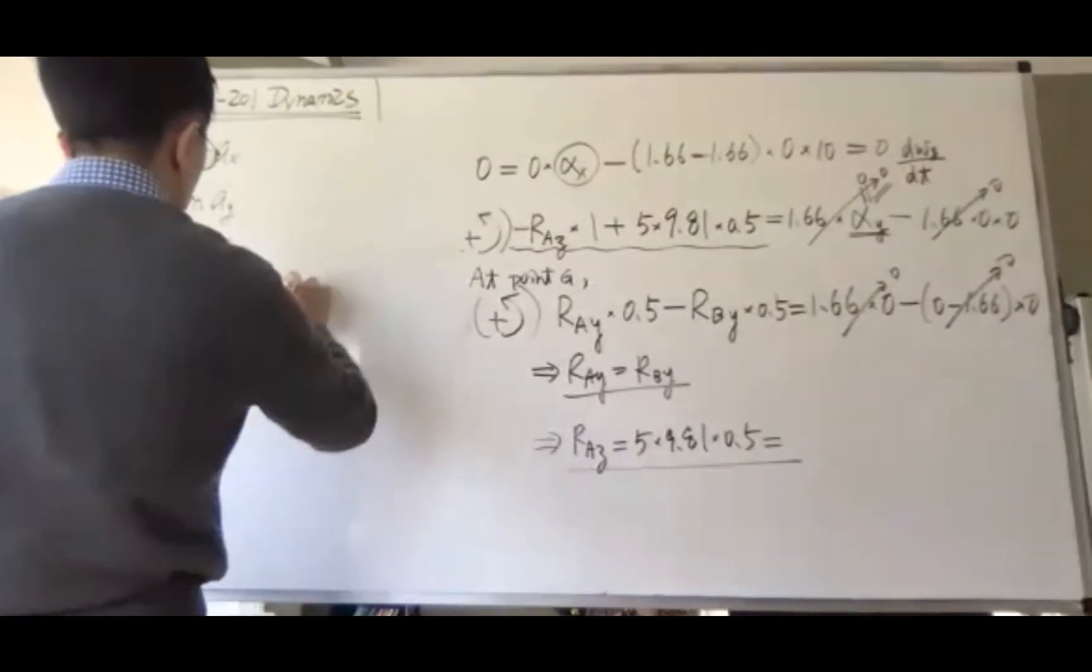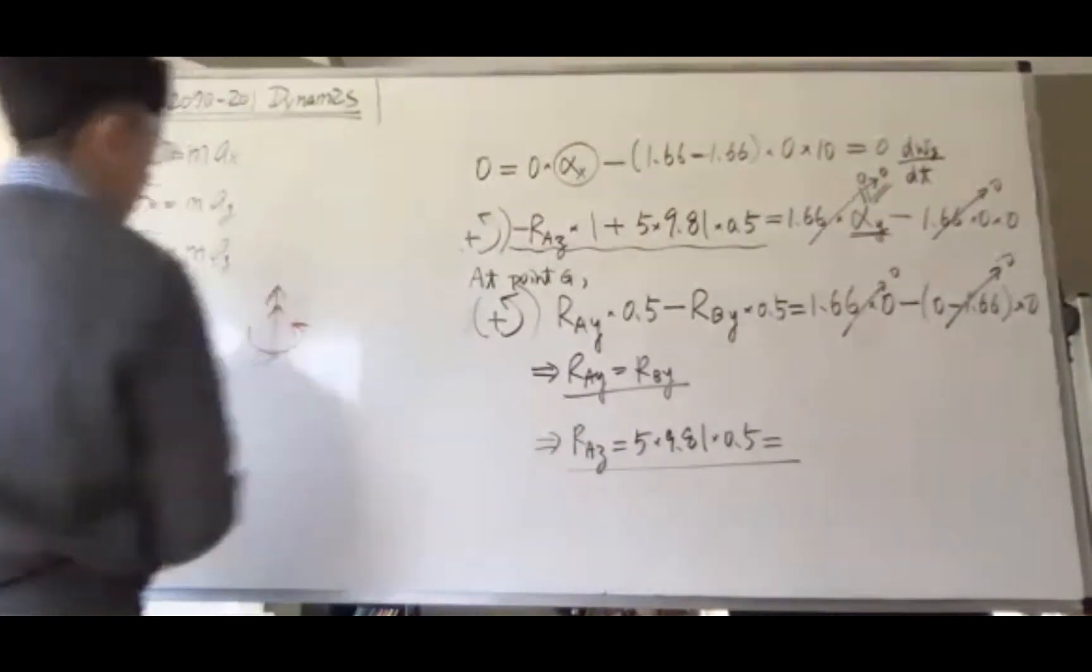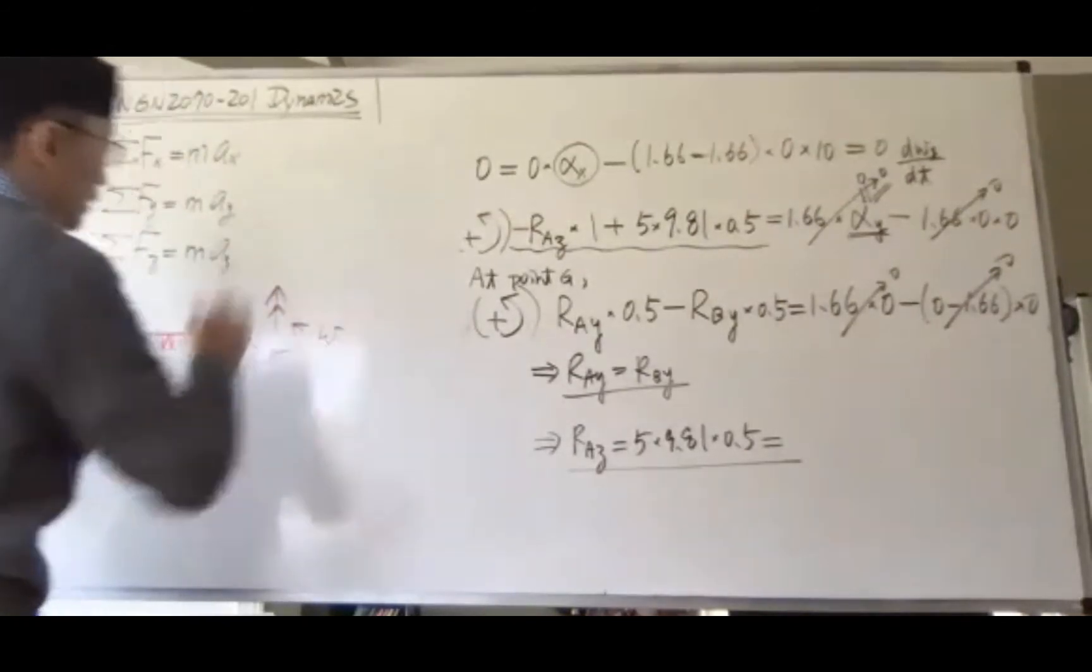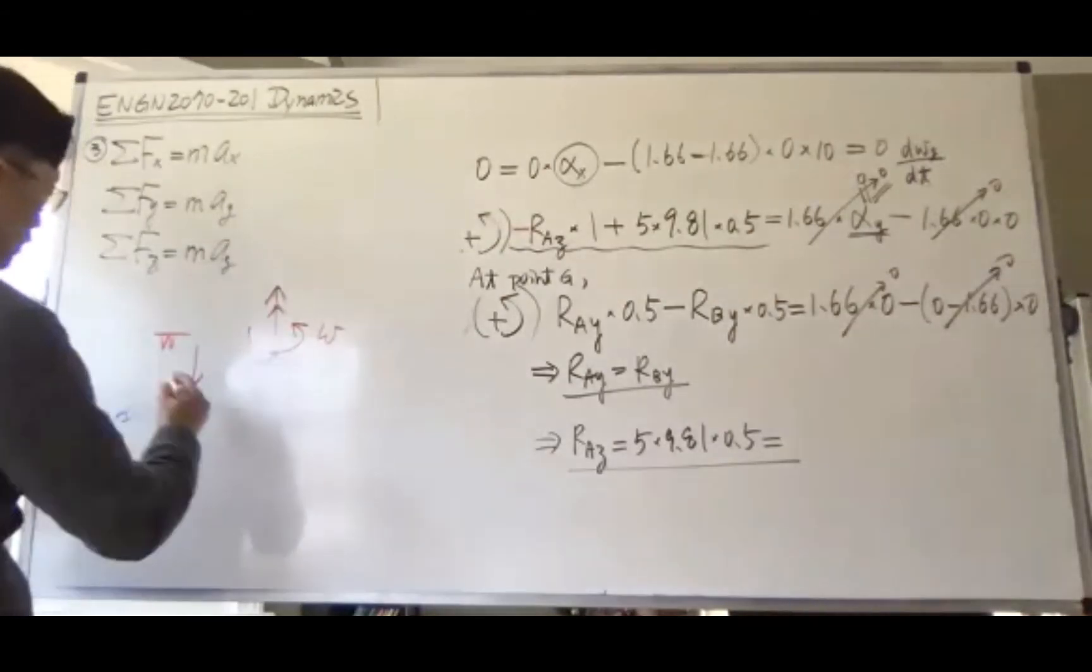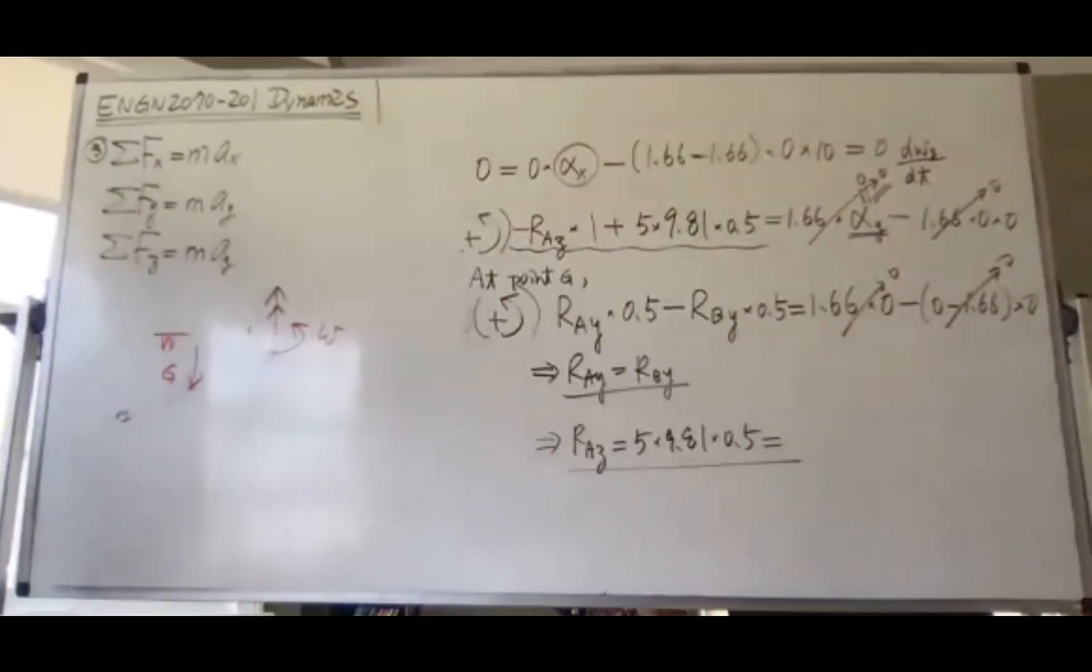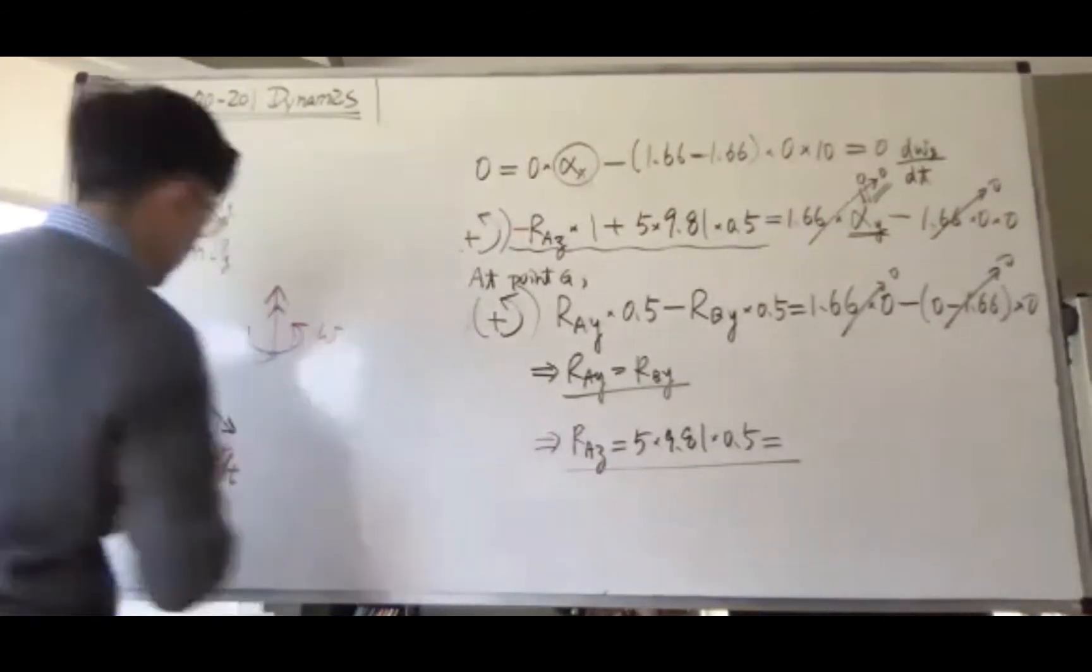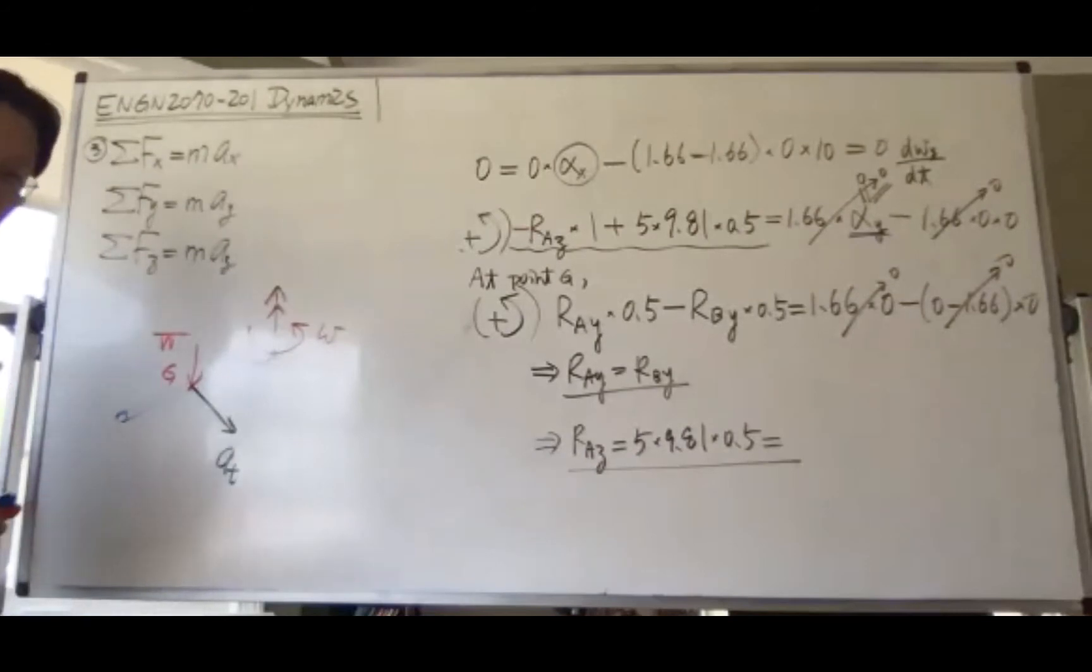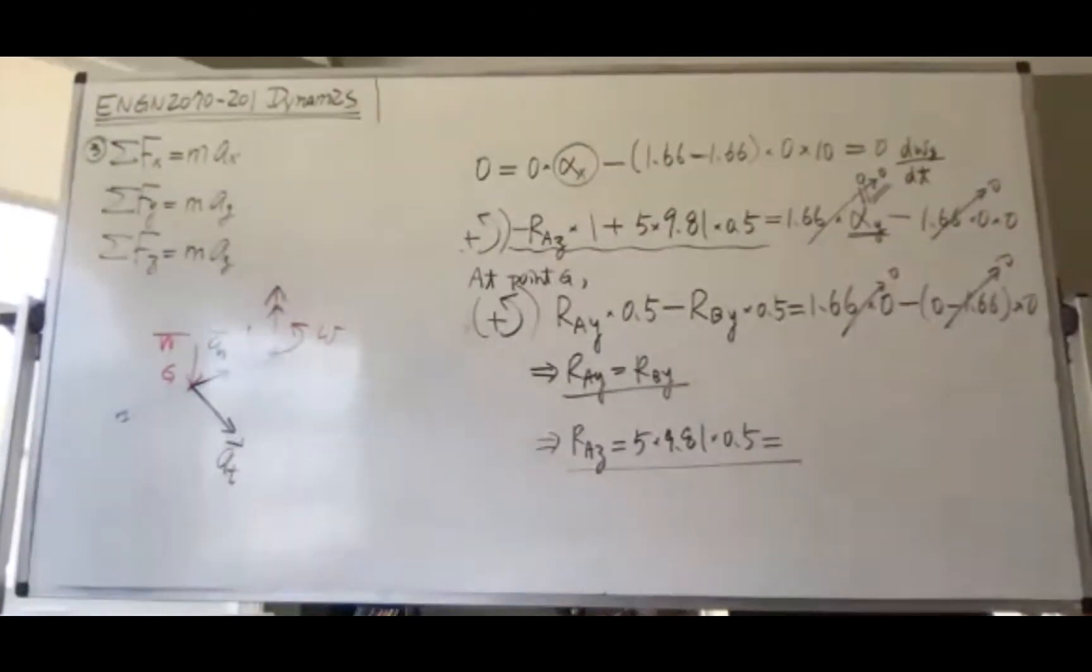If the bar is spinning about the z-axis with omega, and there's a weight here, remember we talked about normal and tangential components. The linear acceleration at the center of gravity has two components: the tangential component, which is perpendicular, and the normal component, which always points toward the center of rotation.